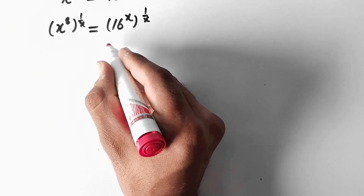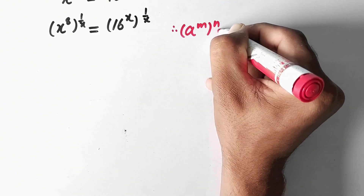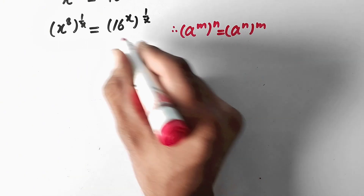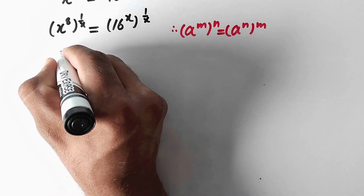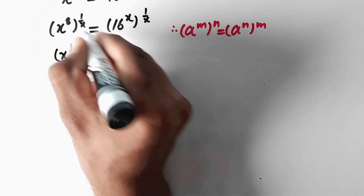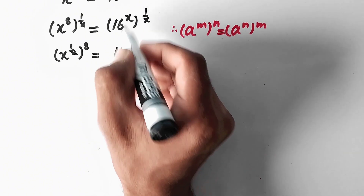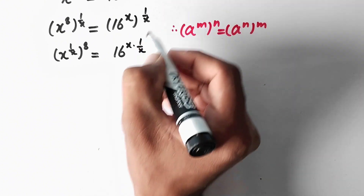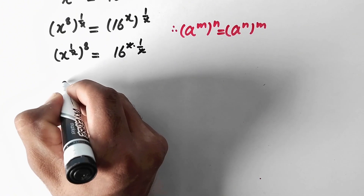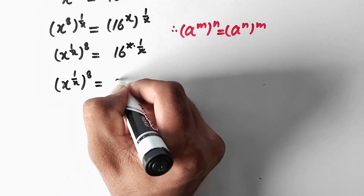Now we will apply another rule of exponents: a to power m to power n can also be written as a to power n to power m — these powers can be exchanged. So we can write x to power 1 over x to power 8. On the right side, x times 1 over x cancels out, leaving us with x to power 1 over x to power 8 is equal to 16.